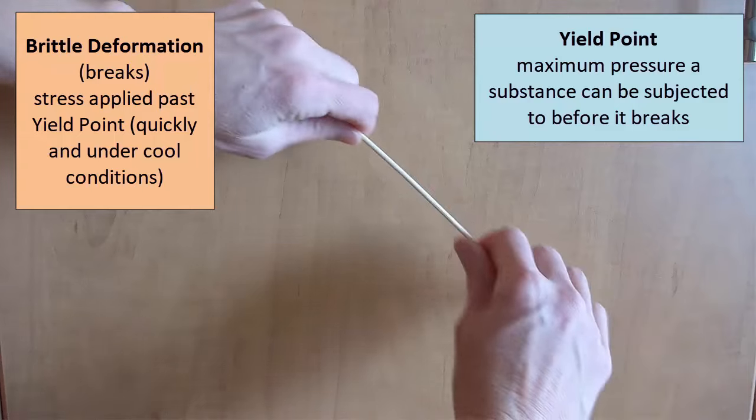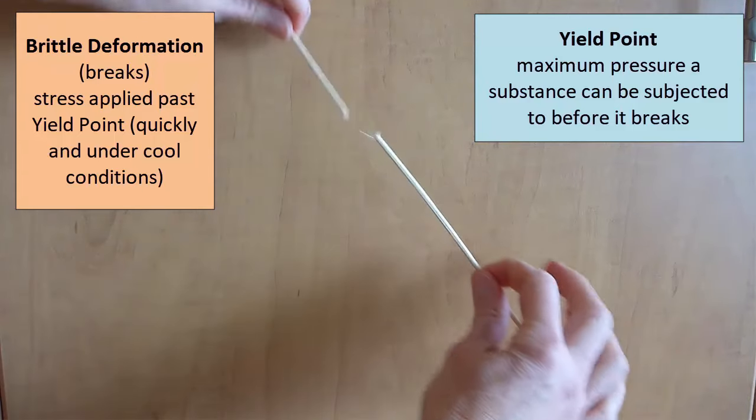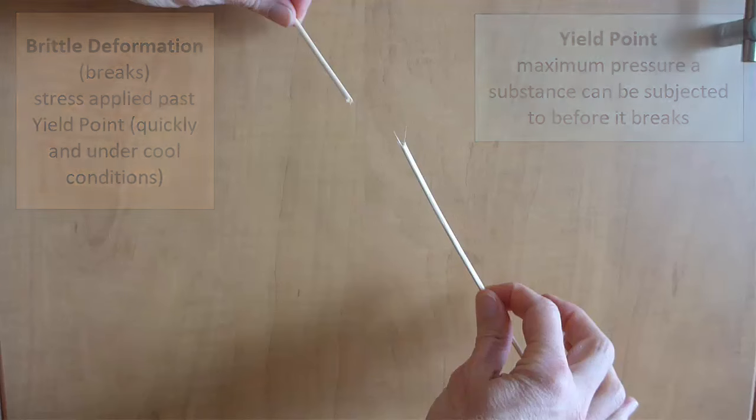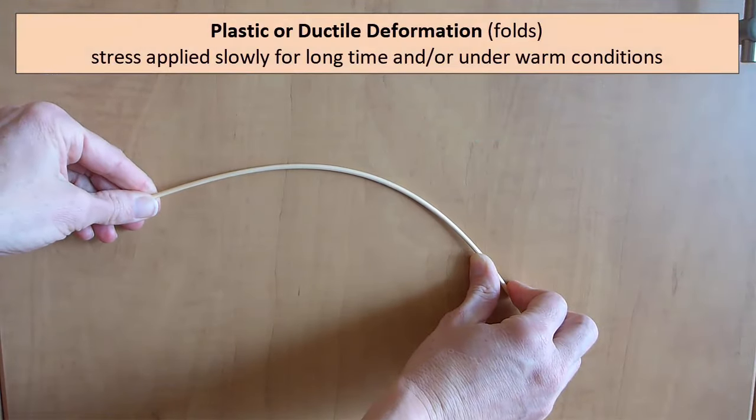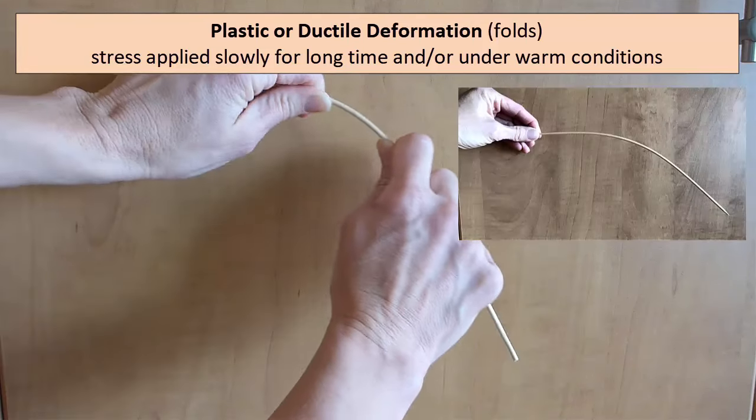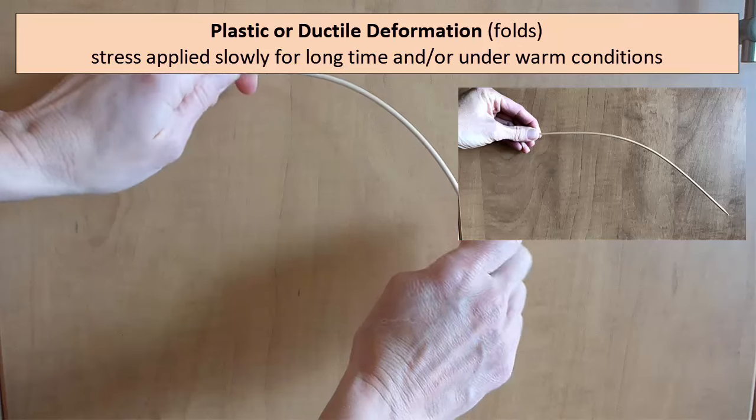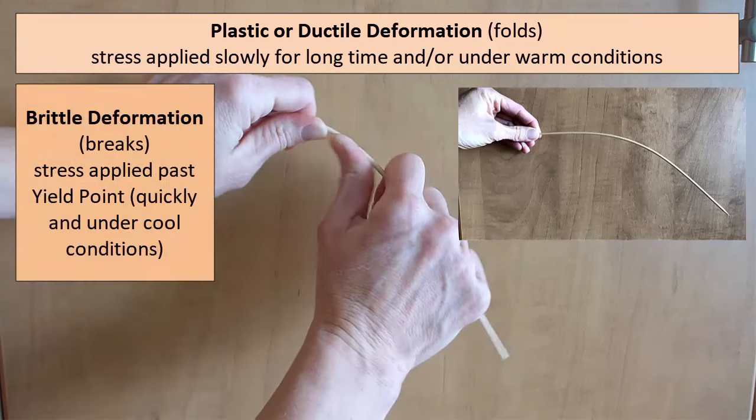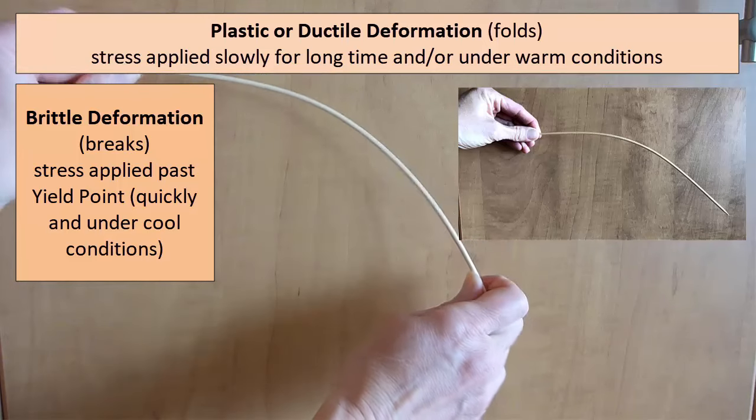Now, how about plastic versus brittle? As you can see in my demonstration, breaking the skewer happens when the stress is applied quickly. The bending required that pressure be applied slowly over a long period of time. In addition, if I use my fingers to warm up the skewer, it's more likely to deform plastically. Colder rocks and materials are more likely to break, warmer ones bend or fold.